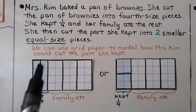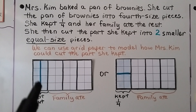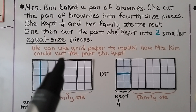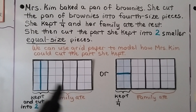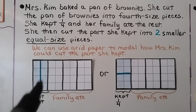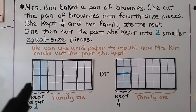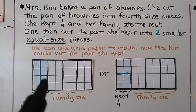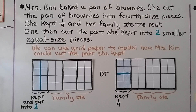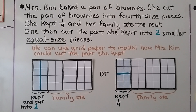We have one-fourth here, one-fourth here, one-fourth here, and one-fourth here. So we split the pan of brownies into four equal parts. Her family ate this part and she kept the other one of the four parts. She cut this part into two smaller, equal-sized pieces. She also could have cut it across this way, and that piece would be equal to that piece.